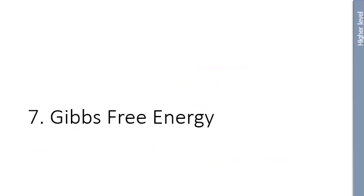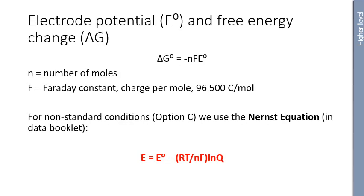Now let's look at Gibbs free energy and how it relates to electrochemical cells. The equation you need to know is: ΔG° = −nFE°, where n is the number of moles of electrons, F is Faraday's constant — 96,500 coulombs per mole — named after physicist Michael Faraday. For non-standard conditions, we use the Nernst equation: E = E° − (RT/nF) ln Q, which is found in the data booklet. We tend to use standard conditions to keep things simpler. If ΔG° is negative, the reaction is spontaneous.